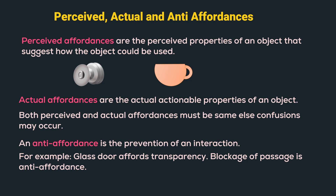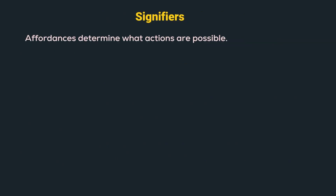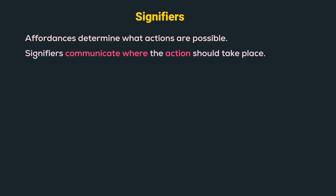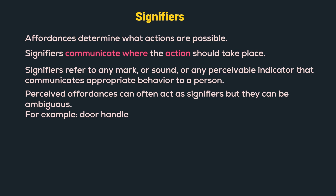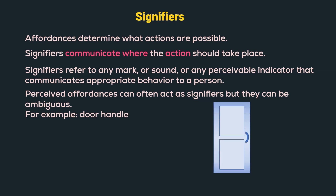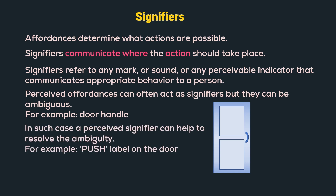Now let us move on to signifiers. Affordances determine what actions are possible, whereas signifiers communicate where the action should take place. Signifiers refer to any mark, sound, or perceivable indicator that communicates appropriate behavior to a person. Perceived affordances can often act as signifiers but can be ambiguous — for example, a door handle can indicate either push or pull. A perceived signifier, such as a push label on the door, can help resolve that ambiguity.